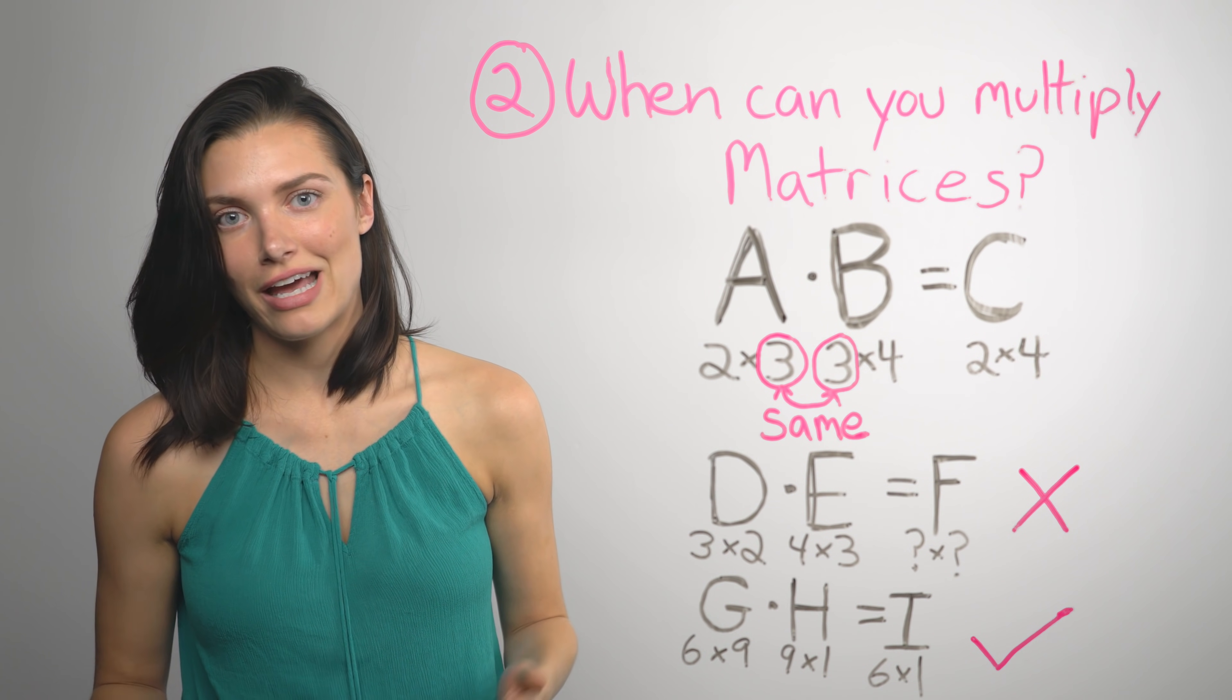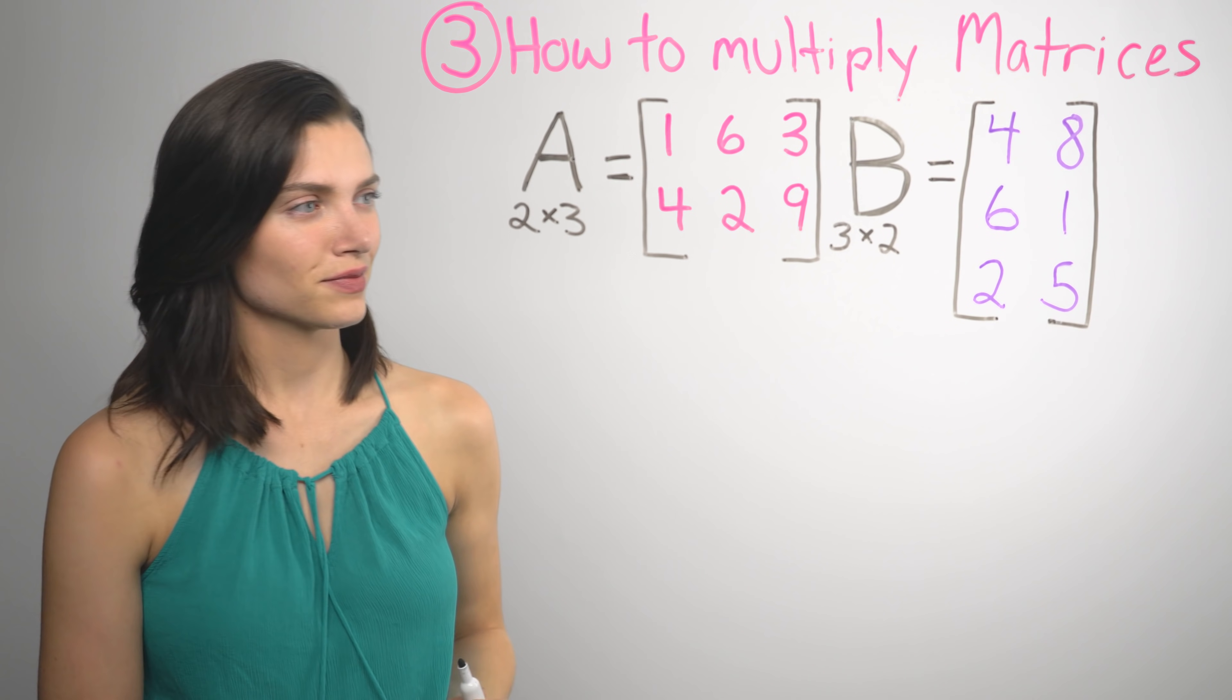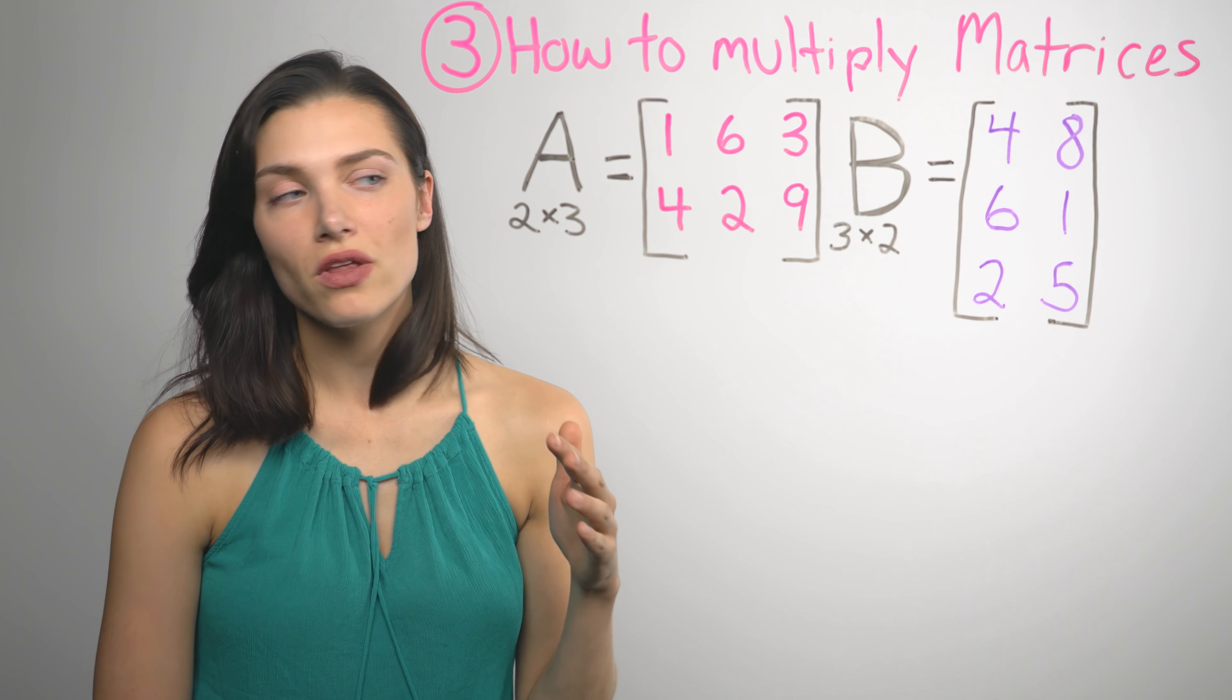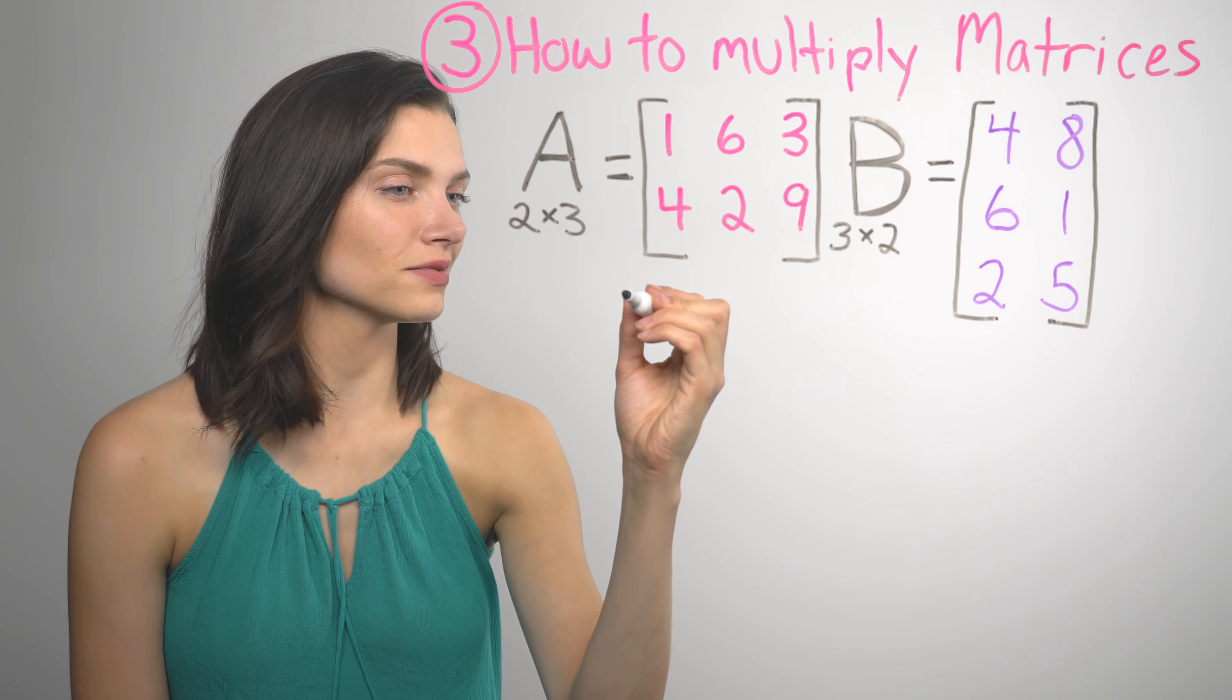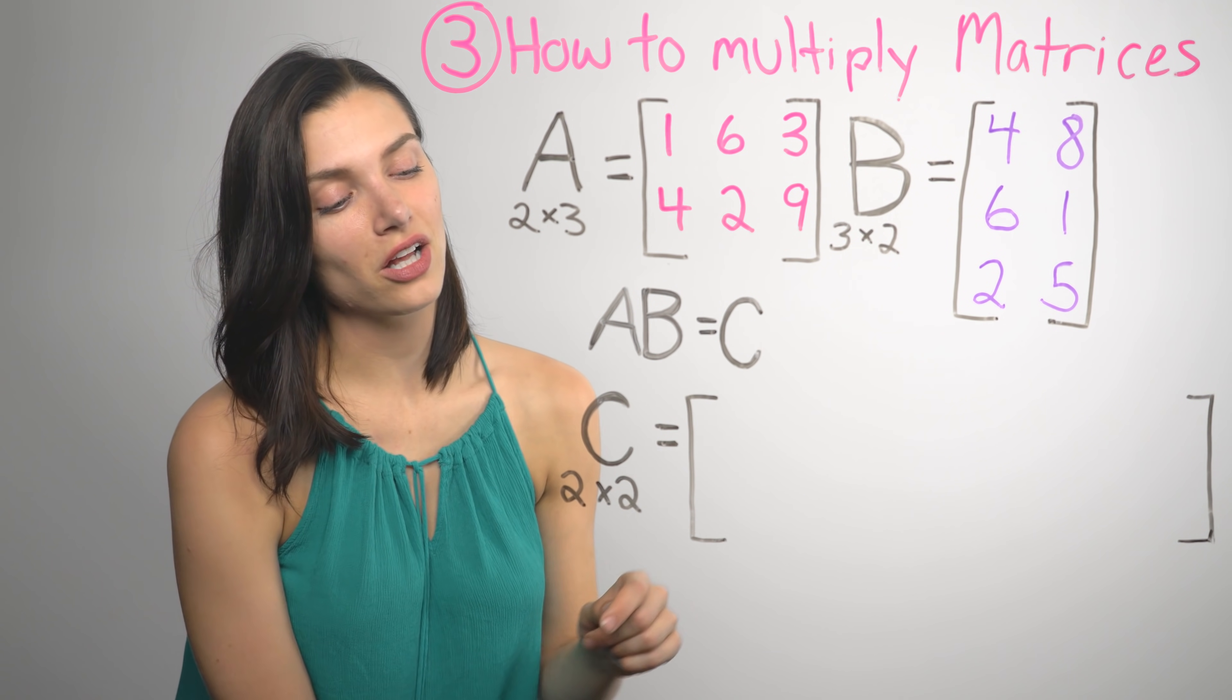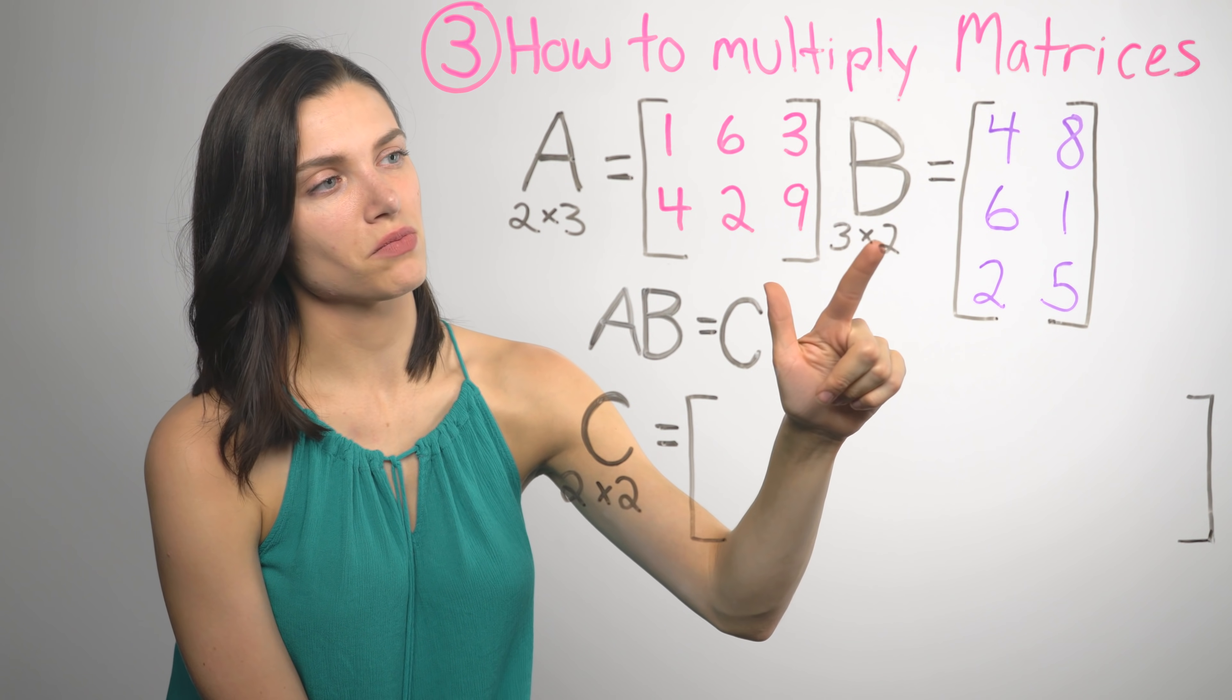So now, let's look at how you can actually multiply two matrices. So here we have two matrices with all the elements written out. So we know that when we multiply them, the new matrix will have two rows and two columns. So for each new element in C, we're going to multiply every element in a row in matrix A by every element in a column in matrix B.